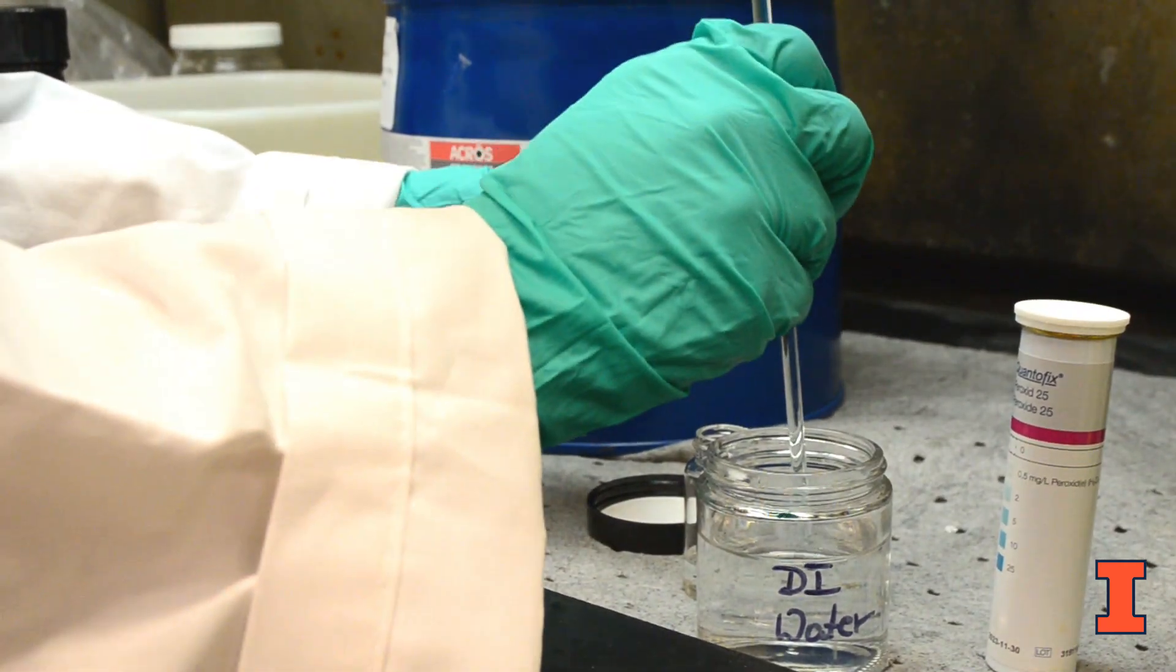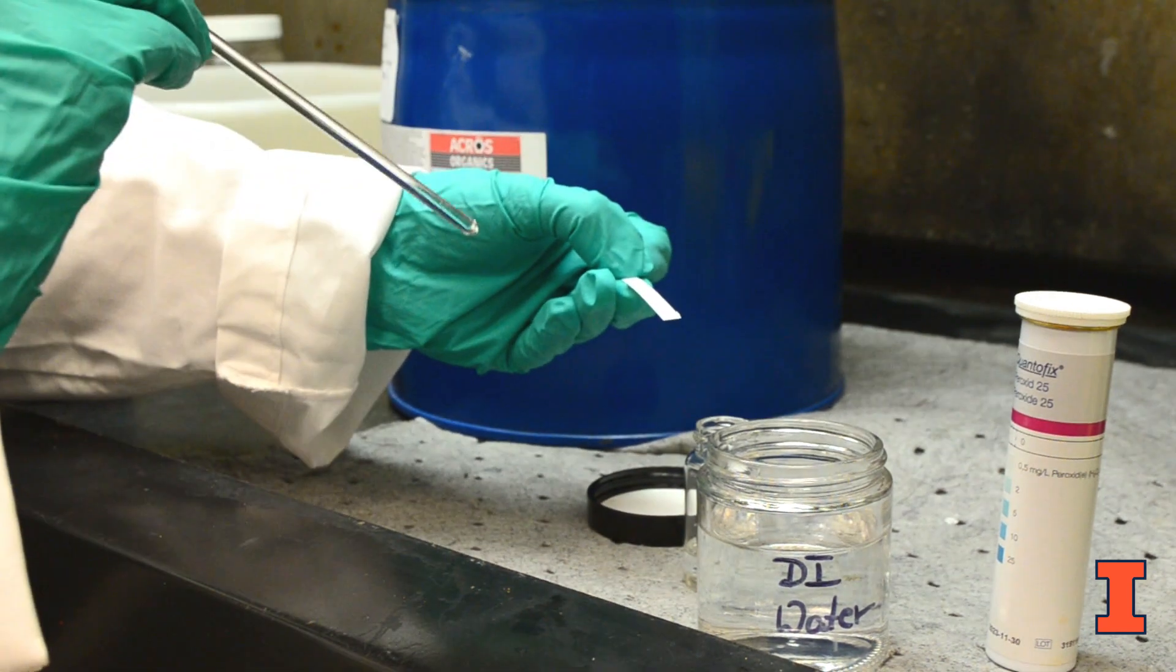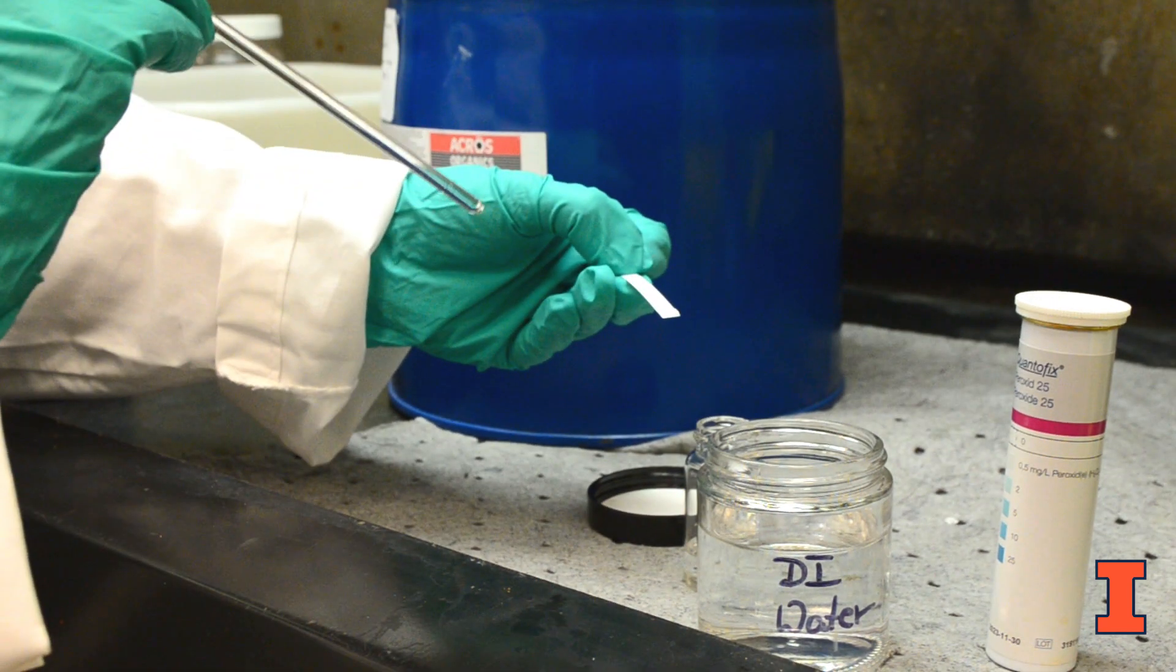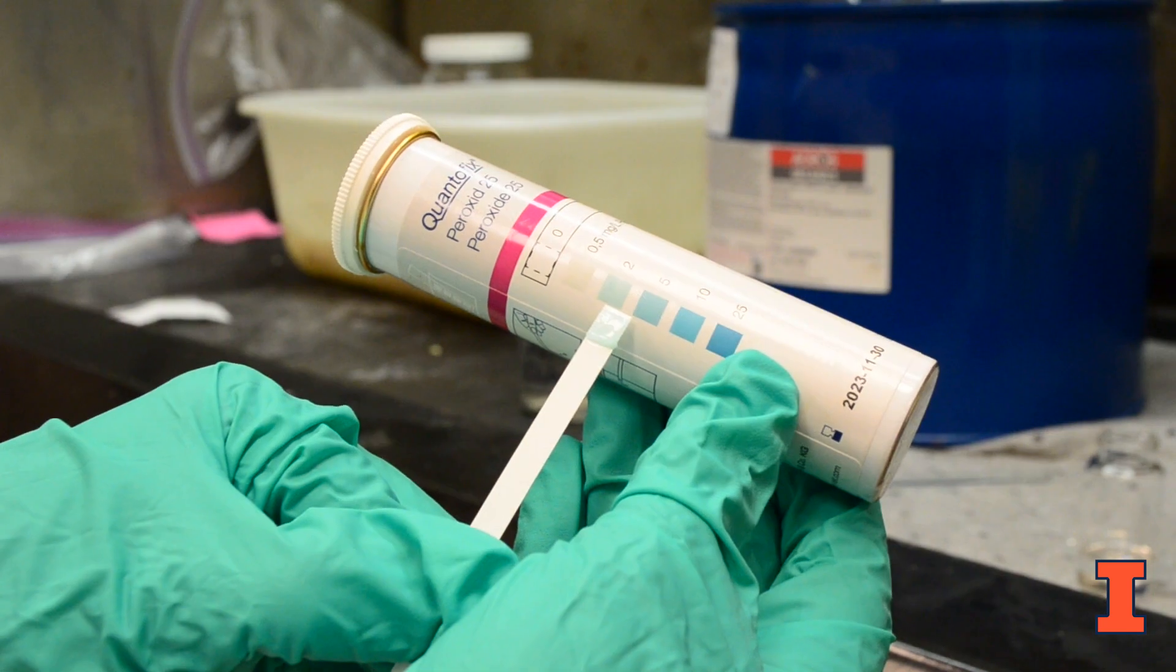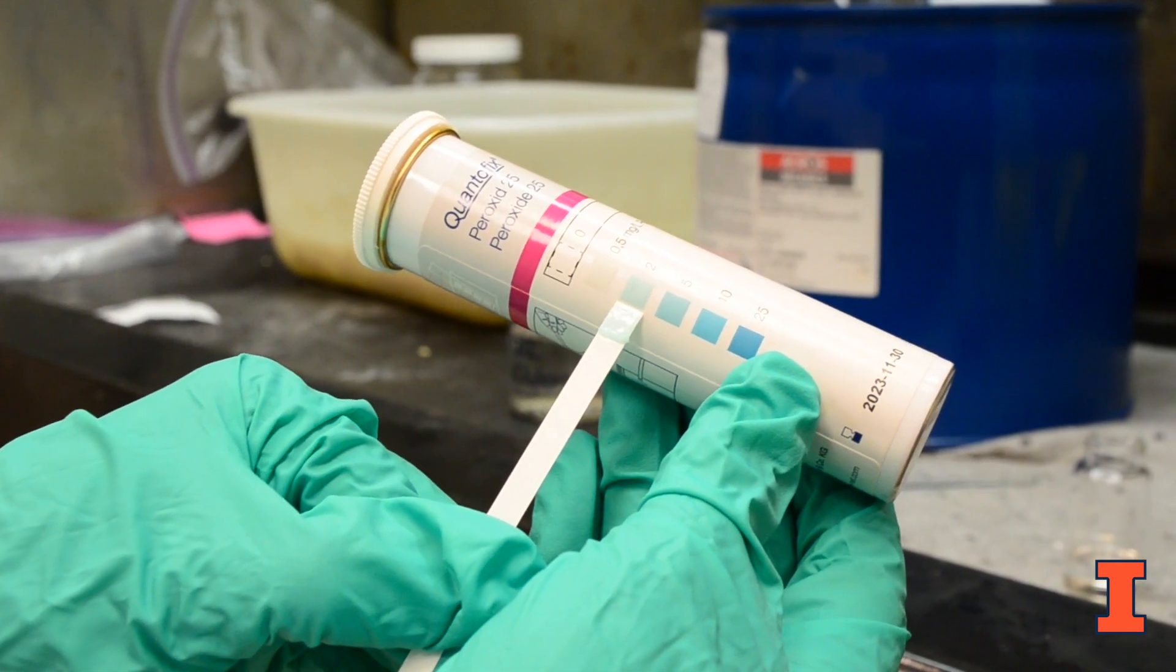If your solvent is organic in nature, remember to moisten the test strip with a drop of distilled water after your solvent dries. Wait for about five seconds and immediately compare the test strip with the provided color scale.